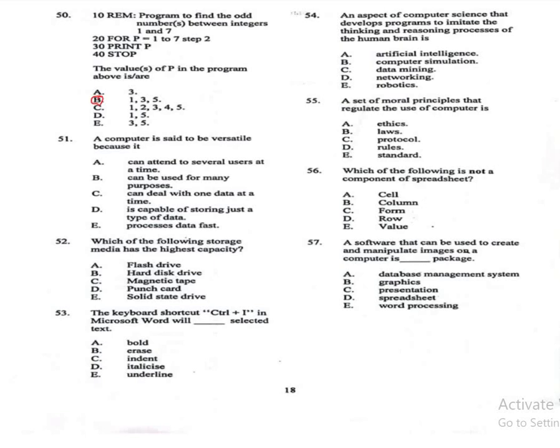Question 51: A computer is said to be versatile because — A: it can attend to several users at a time, B: it can be used for many purposes, C: it can deal with one data at a time, D: it is capable of storing just one type of data, E: it processes data fast. The correct answer is B, it can be used for many purposes.